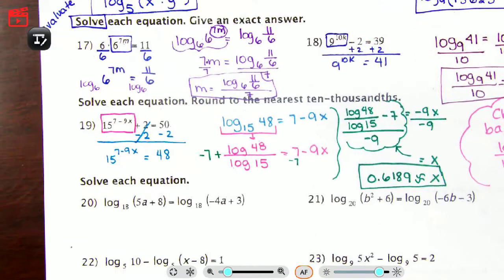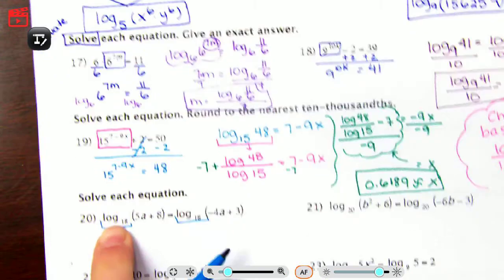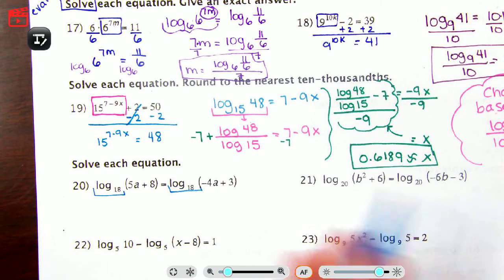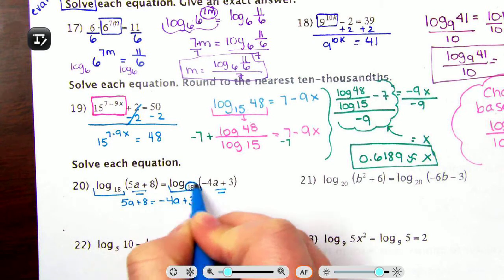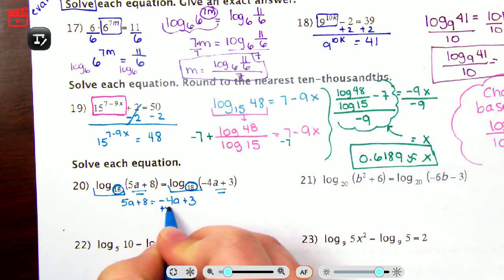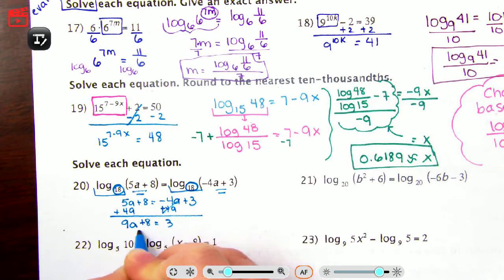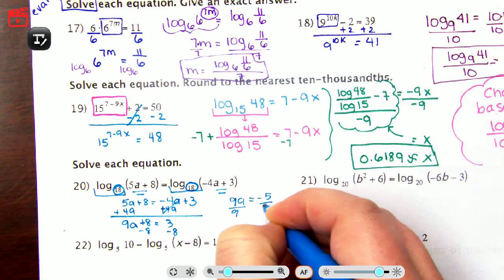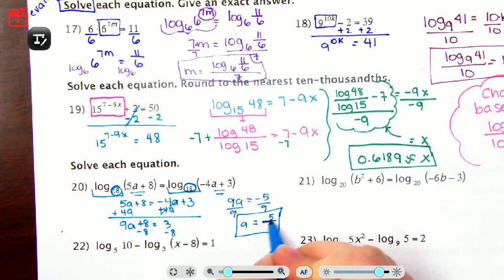Number 20 uses properties. I see log base 18 on both sides with nothing else outside the bubble — two logs with the same base set equal to each other. We use the one-to-one property, which states the arguments are also equal. So 5a plus 8 equals negative 4a plus 3. Adding 4a to both sides gives 9a plus 8 equals 3. Subtracting 8 gives 9a equals negative 5, so a equals negative five-ninths. Leave it as a fraction.